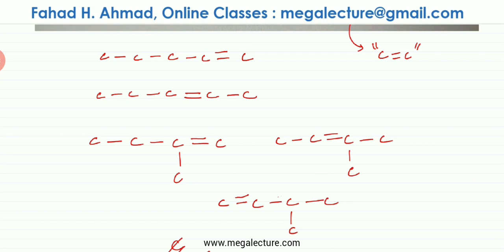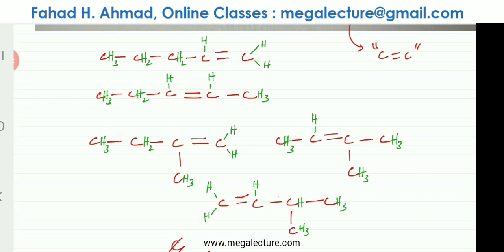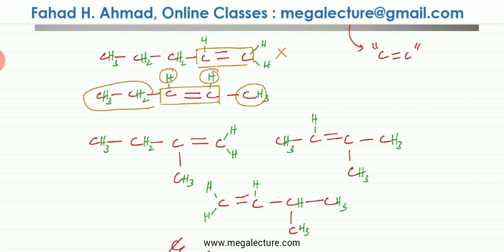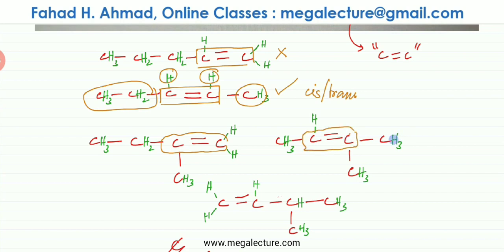Now, since the question also asks about stereoisomers, we look for cis-trans isomers. For cis-trans isomerism, there must be a double bond and both carbon atoms of the double bond must be bonded to two different groups. The first straight-chain isomer does not form cis-trans because both sides have hydrogen. The second one does form cis-trans isomers because it has a hydrogen and a CH3-CH2 group on each side of the double bond. The branched isomers do not form cis-trans because they have the same groups on both sides or hydrogens on both sides.